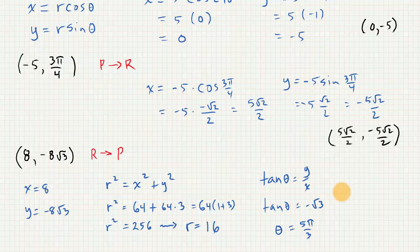So we are going to go with r, theta as 16, 5 pi over 3.